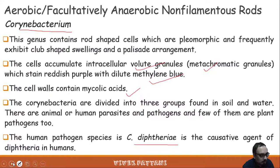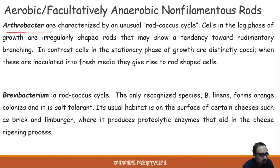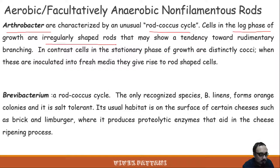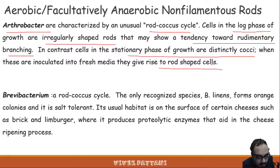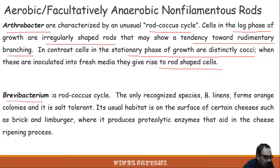Arthrobacter is characterized by an unusual rod-coccus cycle. Cells in the log phase of growth are irregular rods, showing a tendency towards rudimentary branching, but in the stationary phase they become distinctly coccoid. When these are inoculated into fresh medium, they give rise to rod-shaped cells again.